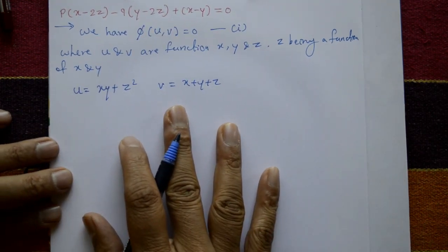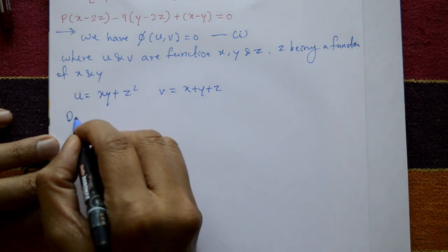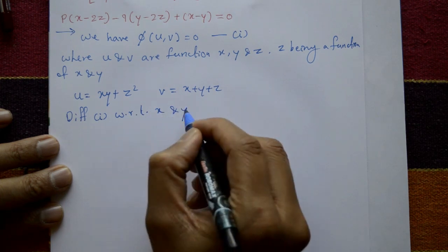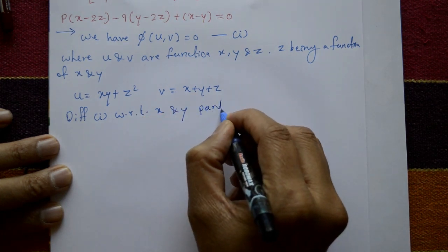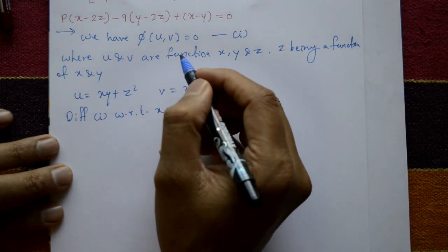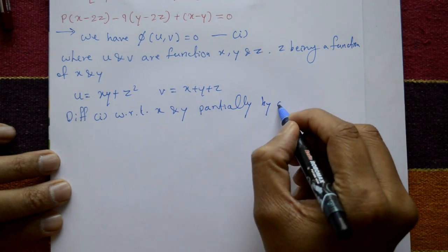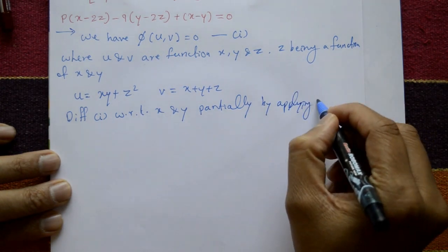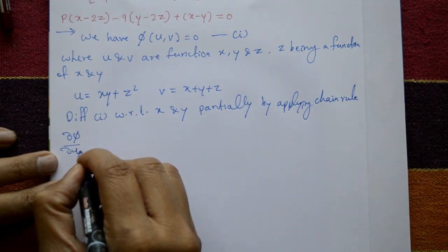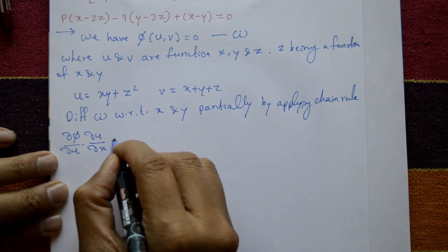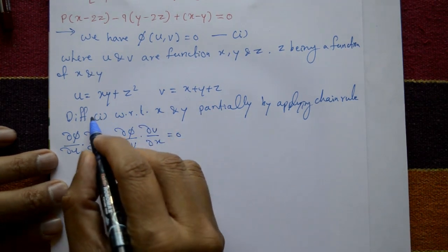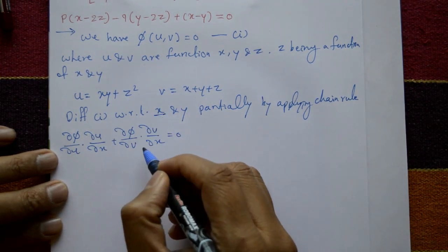Now differentiate equation one with respect to x and y separately, partially. Differentiate one with respect to x partially, y treated as a constant, by applying the chain rule: ∂φ/∂u · ∂u/∂x + ∂φ/∂v · ∂v/∂x = 0.